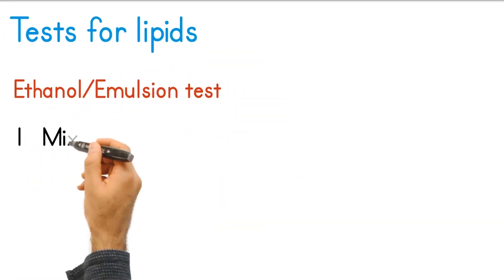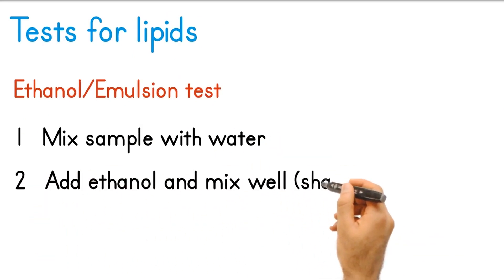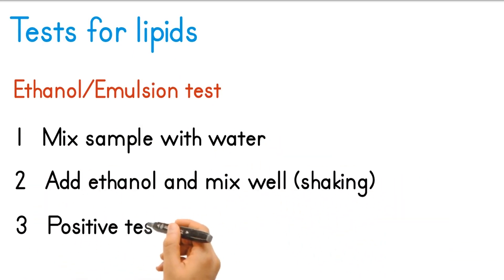Test for lipids, the ethanol or emulsion test. First, mix sample with some water. Then add ethanol and mix well by shaking. A positive test is shown if a cloudy layer appears in the mixture.